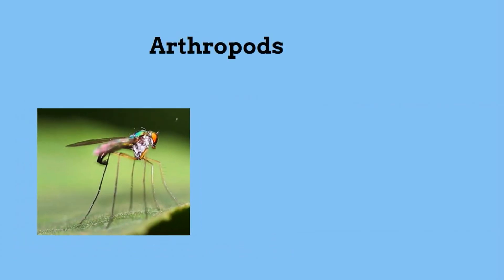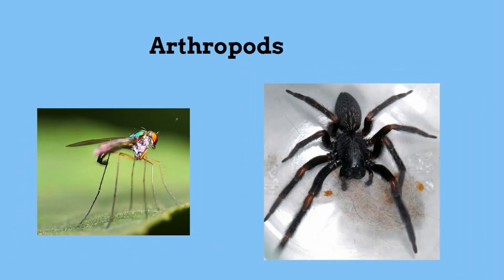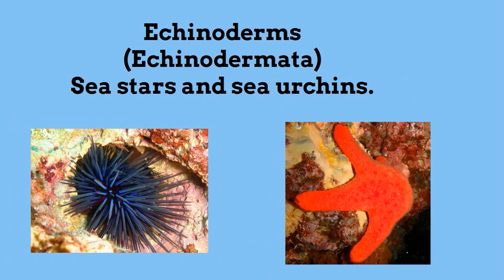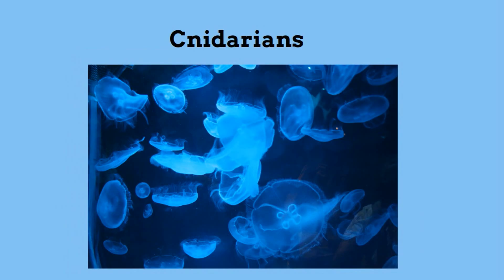Up next, arthropods, which is the largest animal phylum, and they have jointed external skeletons and include insects. Next are echinoderms, or sea stars and sea urchins. Cnidarians, or jellyfish and sea anemones.